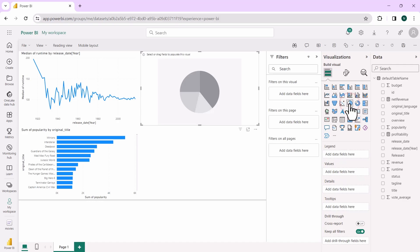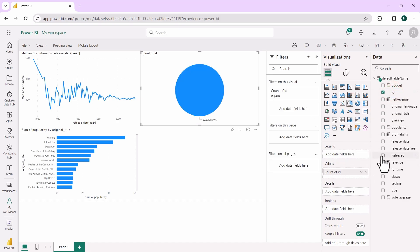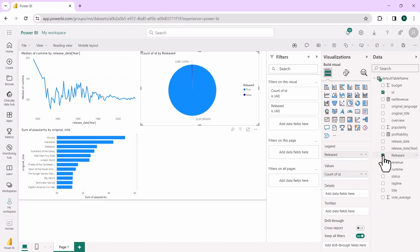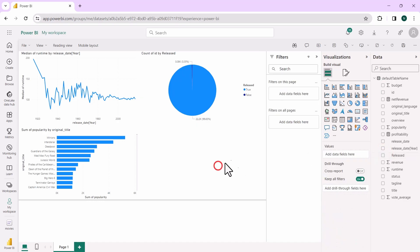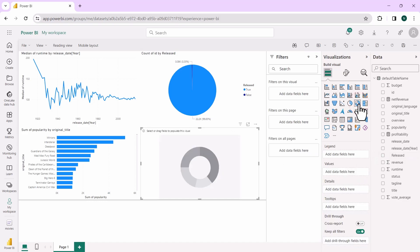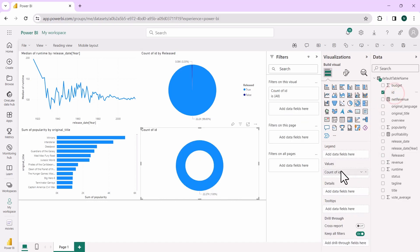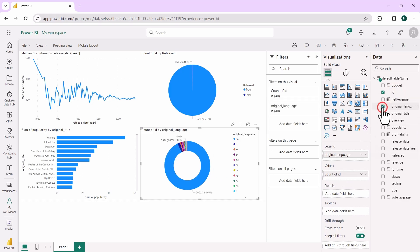Then opt for a pie chart. Click on ID and release to show that 99.64% of the movies are released. For the fourth visualization, choose a donut chart. Click on ID and then original language to reveal that the majority of the movies are in English.